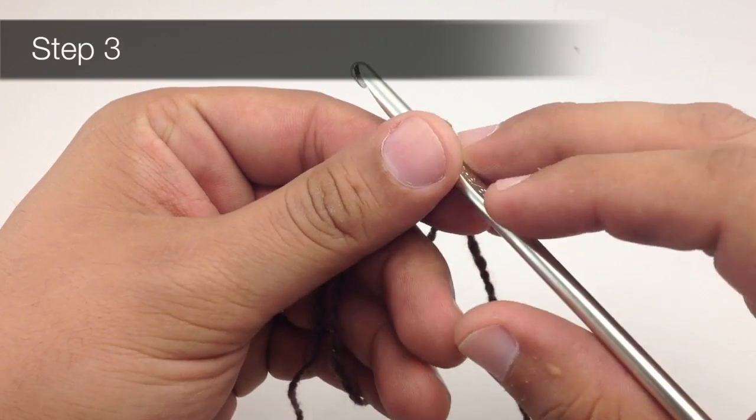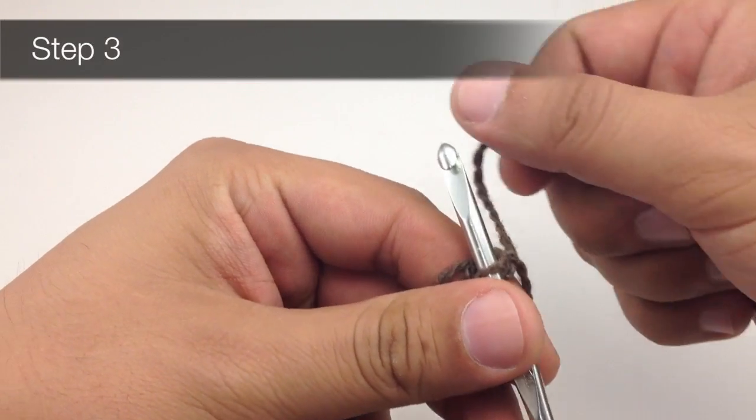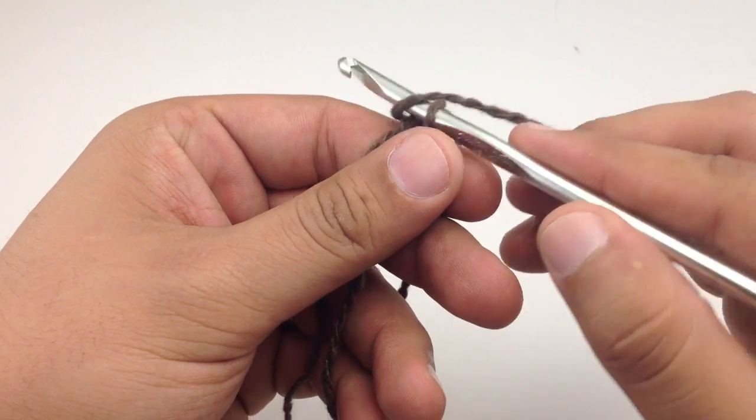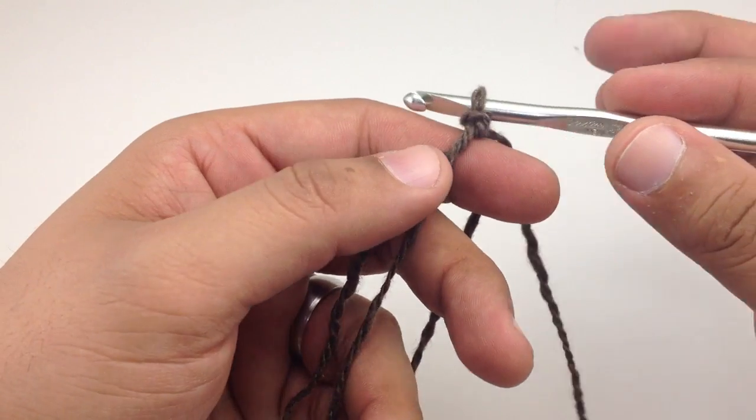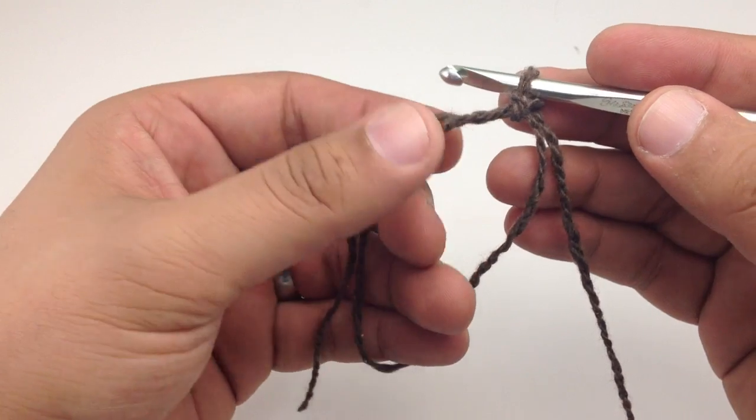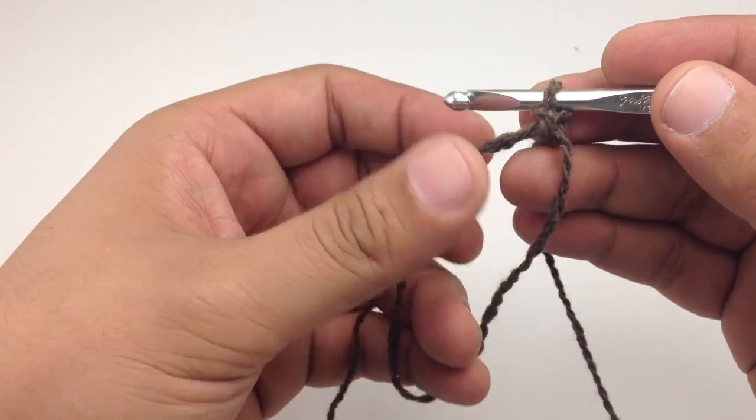For step three we're going to yarn over again and draw that yarn through the loop that is on our hook. Now we can remove the loop from our hand.